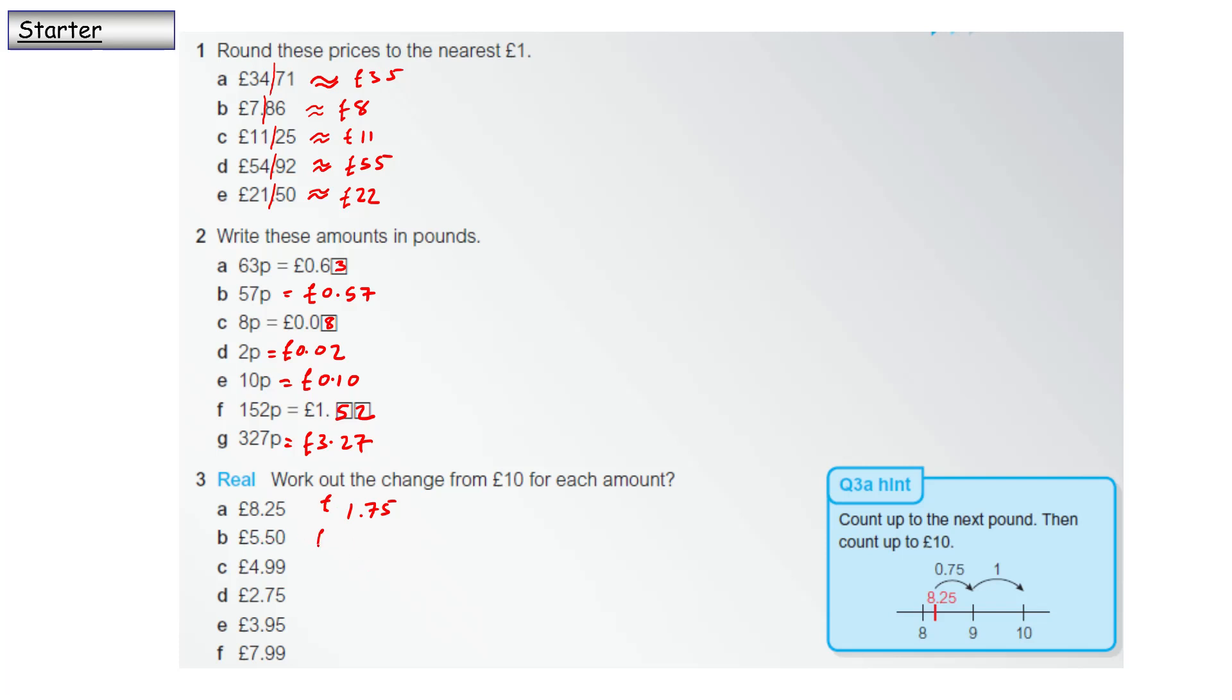£5.50 - so 50p to get to £6 is 50p, and from £6 to £10 you need £4, so £4.50. To get to £5 is 1p, and from £5 to £10 is £5, so £5.01.